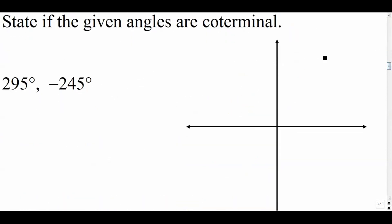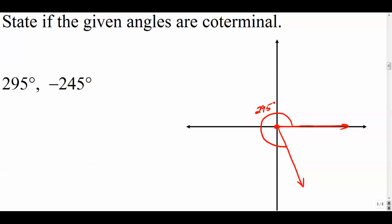Problem two: 295 degrees and negative 245 degrees. Drawing 295: it's positive, going 90, 180, 270, and 25 more — so about right there. Negative 245 goes the negative direction: negative 90, negative 180, stopping at about negative 245. These are definitely not coterminal — they don't stop at the same spot. The answer is no.